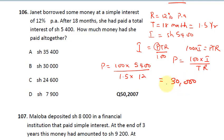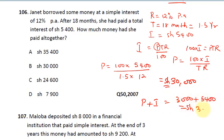So the principal is 30,000 shillings. How much has she paid altogether? She pays principal plus interest: 30,000 + 5,400 = 35,400 shillings. That is the total money she has paid, and the correct answer is A.